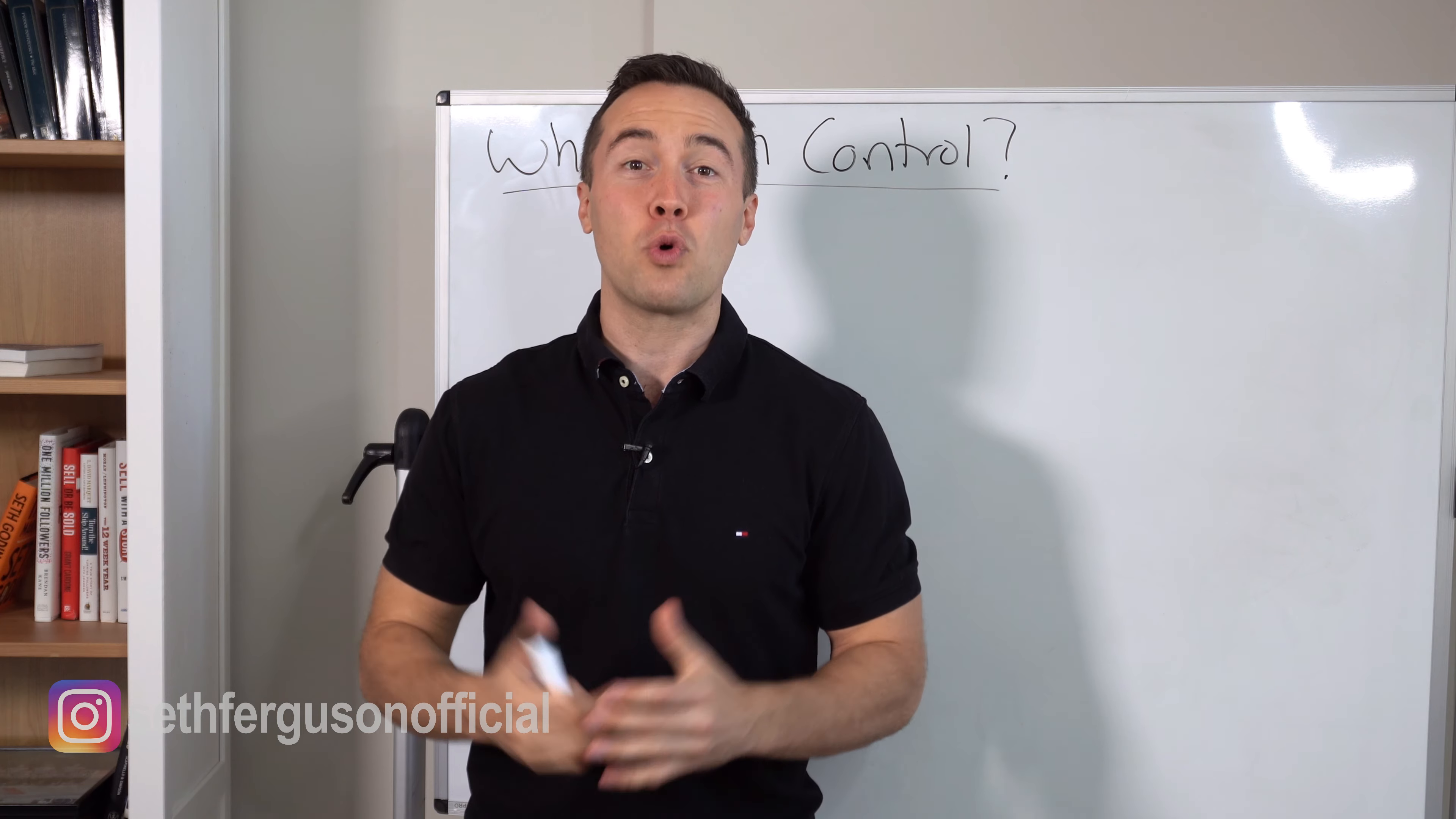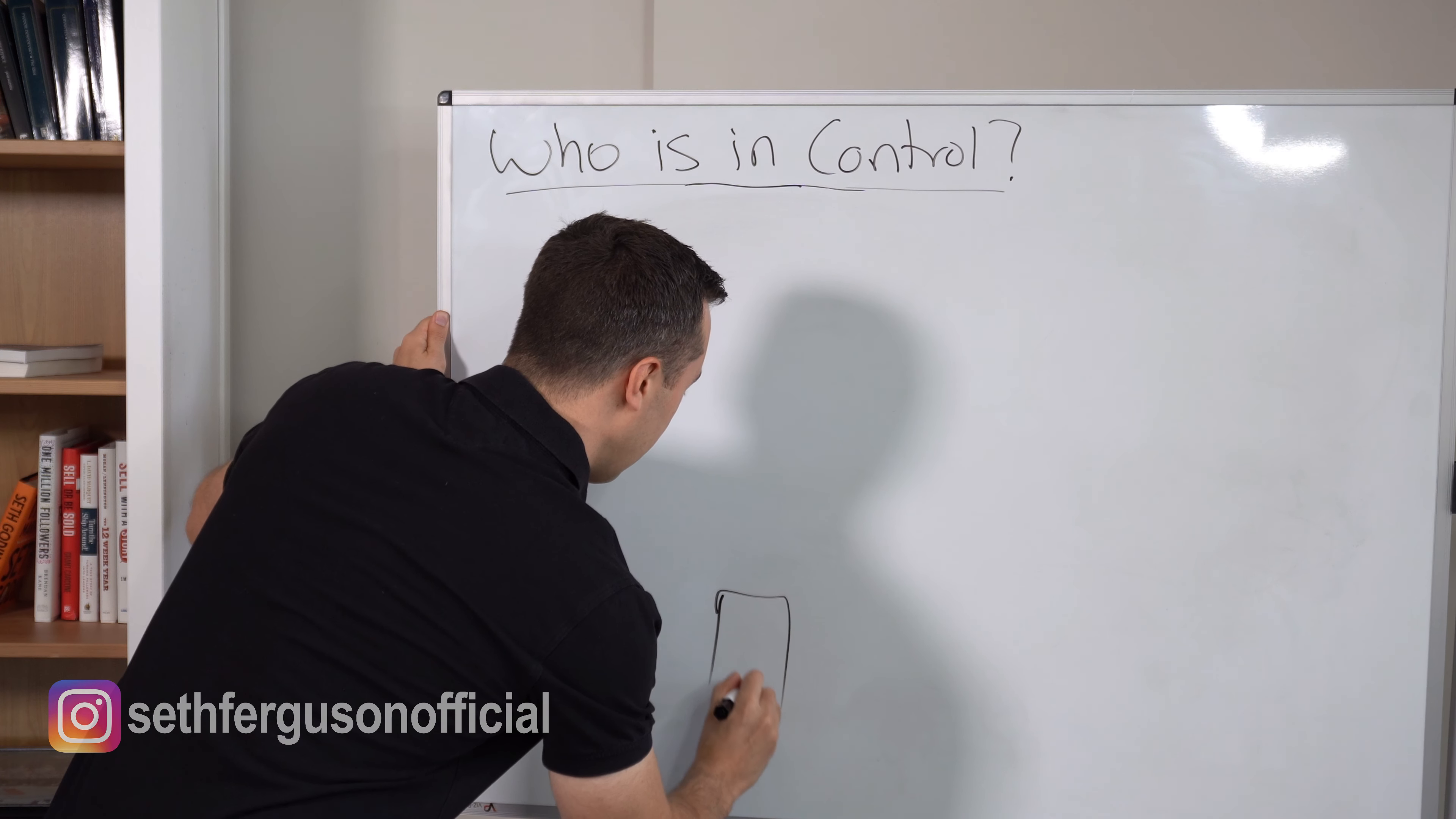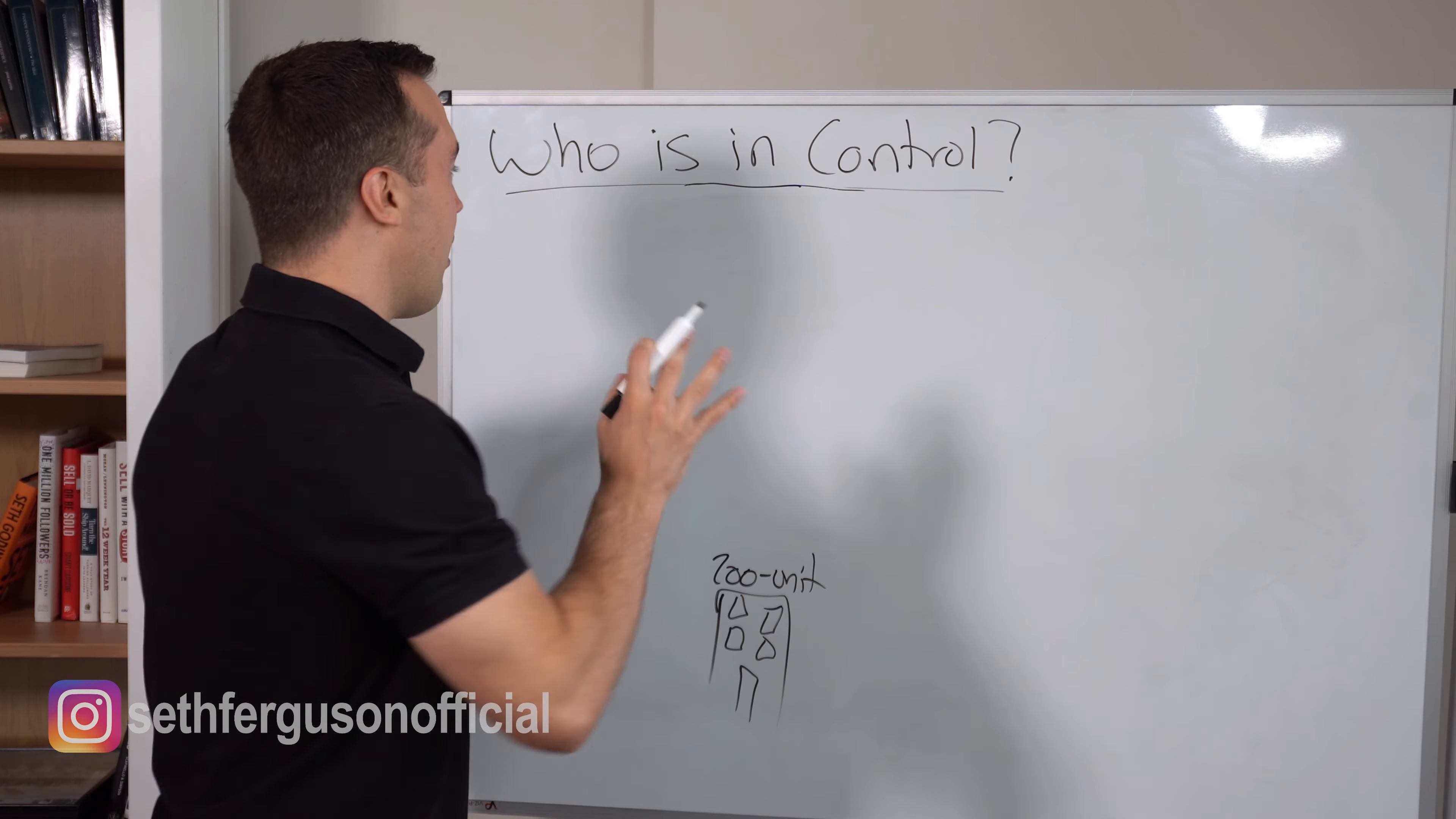Let's get right into it and talk about who manages or controls a real estate syndication. When we talk about managing or controlling real estate syndication, I like to break this down into three different layers. Let's start off by drawing the property itself down here at the bottom. For the sake of this example, let's just say this is a 200-unit apartment building.